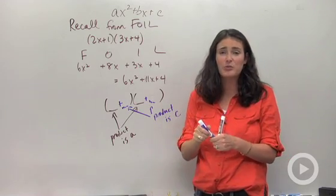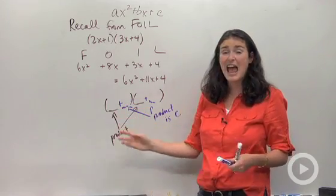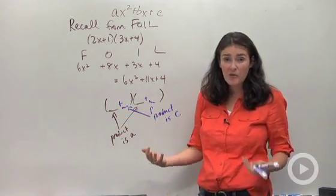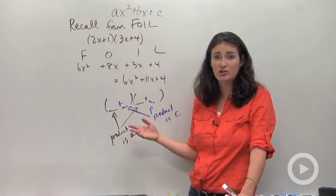And then you're going to have to mess around with the positive signs, the negative signs, with how you order things. And you're going to have to check your work by foiling until you find some combination that gives you your original trinomial.